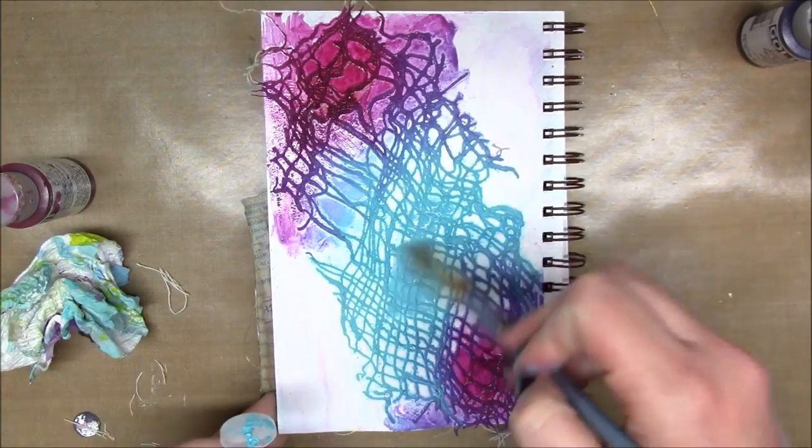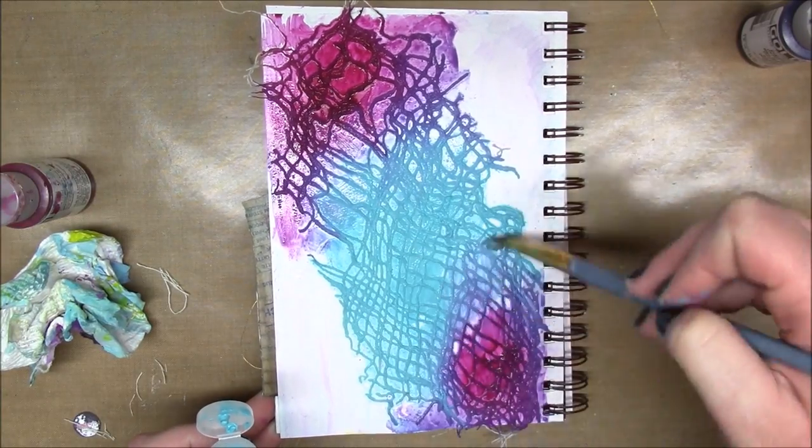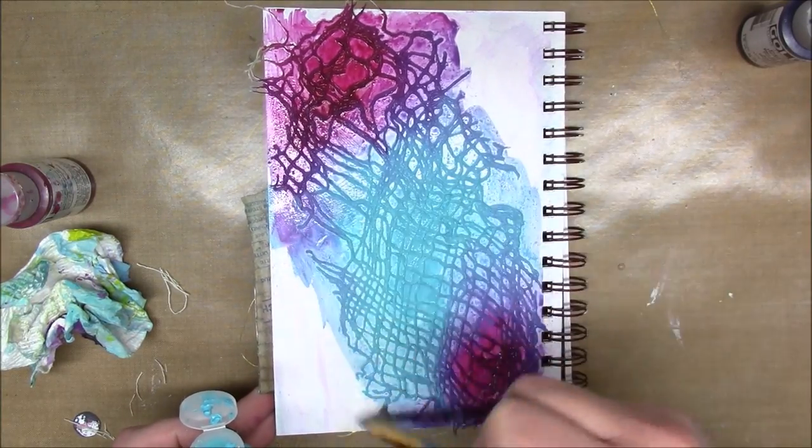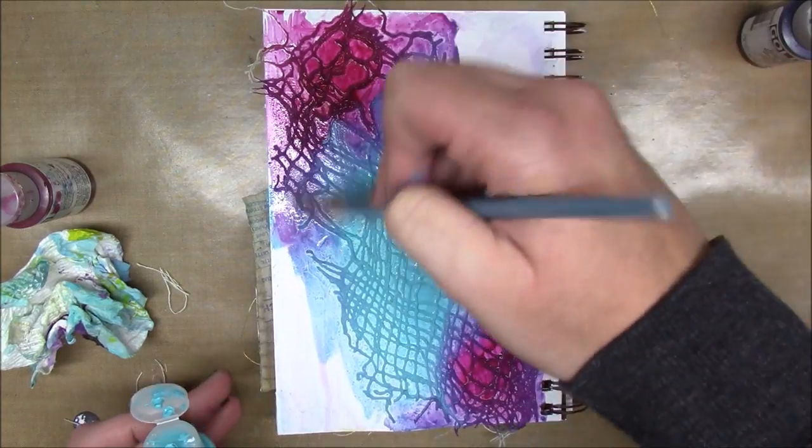I'm adding the teal and then the magenta and blending it together. It gets this really nice purple color where they meet.